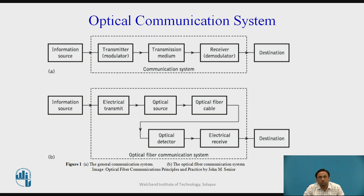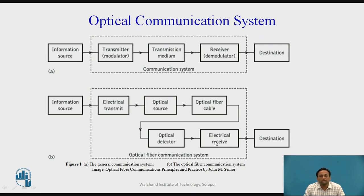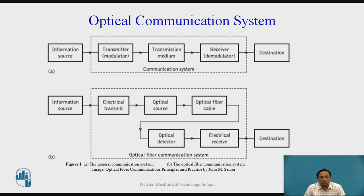The optical detectors must have a very fast response because data transmission in optical fiber is very fast compared to normal transmission mediums. Optical detectors used include PIN diodes, APD (avalanche photodiodes), phototransistors, and photodetectors. These detect the light carrying data, convert it back into an electrical signal, and that signal is given to the destination. The key modification in optical fiber communication is the addition of the optical source and optical detector.